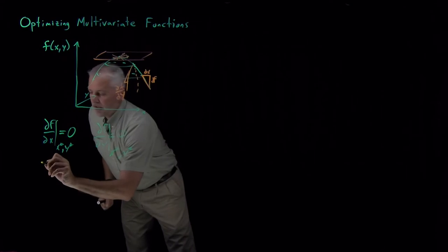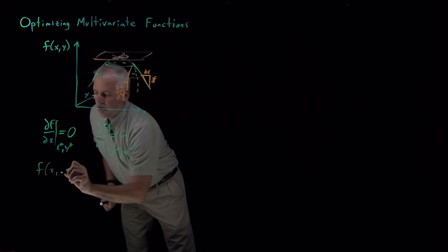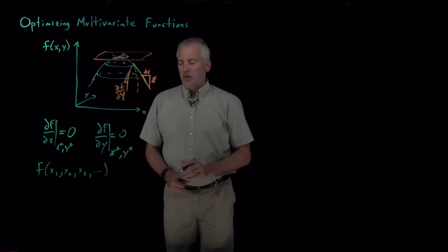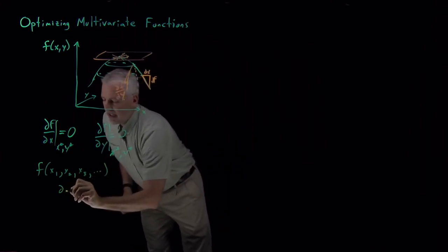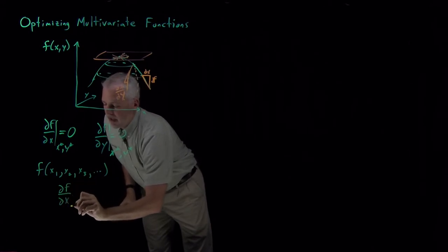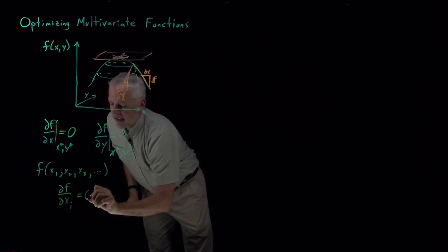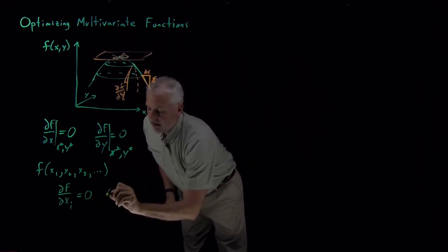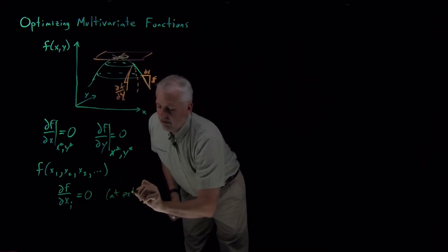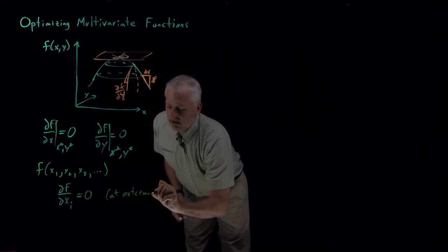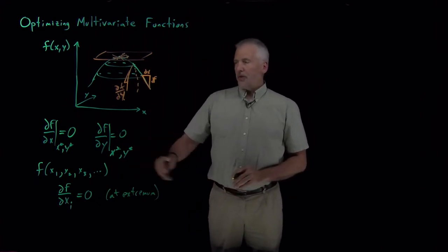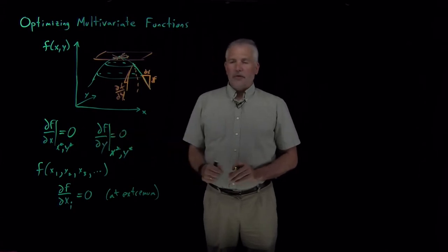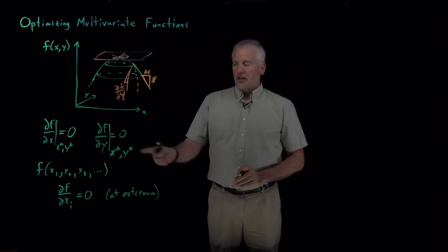For a more complicated function, if I have more than just two variables, if I have maybe three or maybe a hundred variables, a function that depends on lots and lots of variables, the requirement for being at an optimum or an extremum is the derivative with respect to any one of those directions has to be zero. The partial derivative has to be zero if I'm at an extremum of the function. So that's the prescription for how to find the maximum or minimum of a multivariate function: just take all the partial derivatives with respect to any one of the variables and set them all equal to zero.